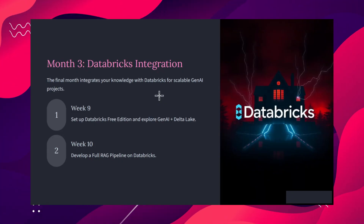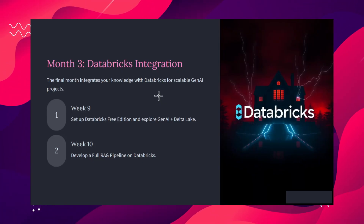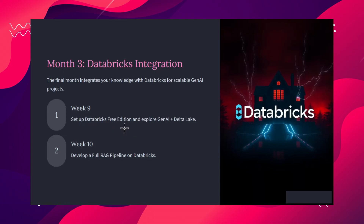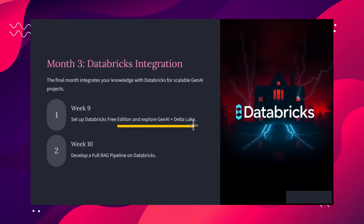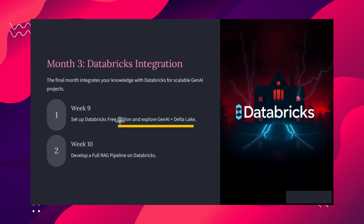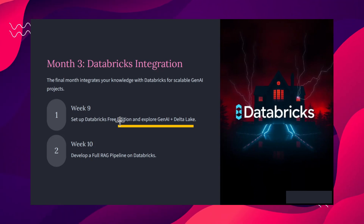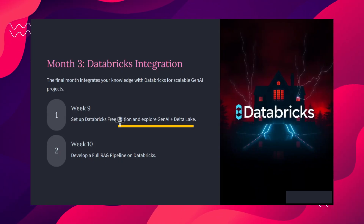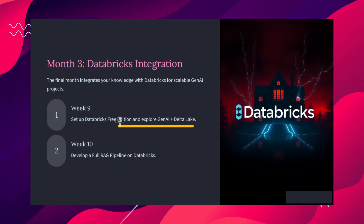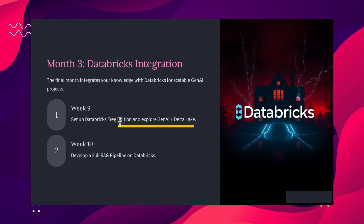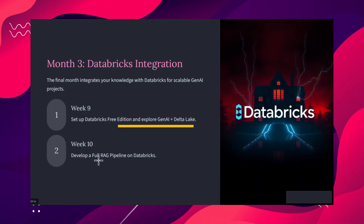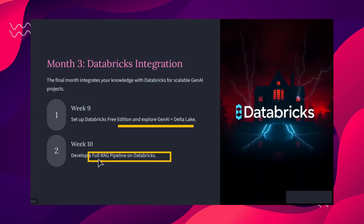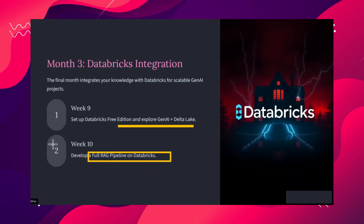In month three, we integrate everything with Databricks for scalable GenAI projects. Week nine involves setting up the Databricks free edition and exploring GenAI and data lakes. The free edition includes many built-in LLMs and models, and a framework to develop, deploy, and serve models simply. Week ten is about developing a full RAG-based model on the Databricks platform, building a complete RAG pipeline.